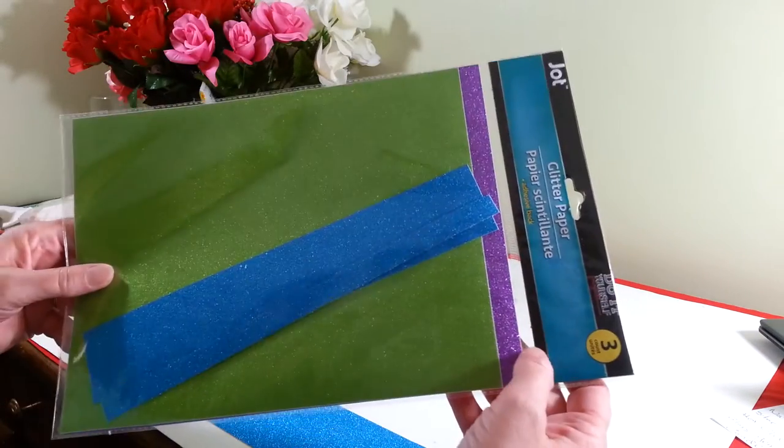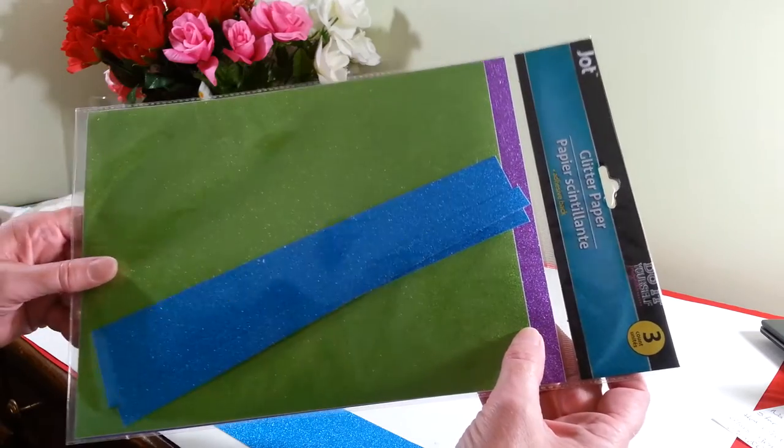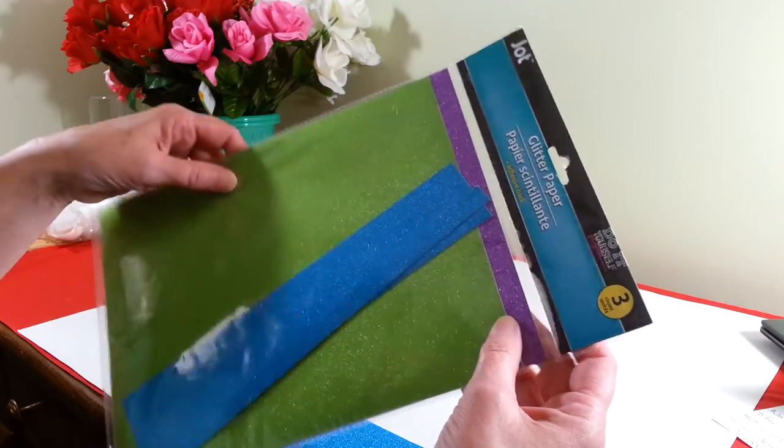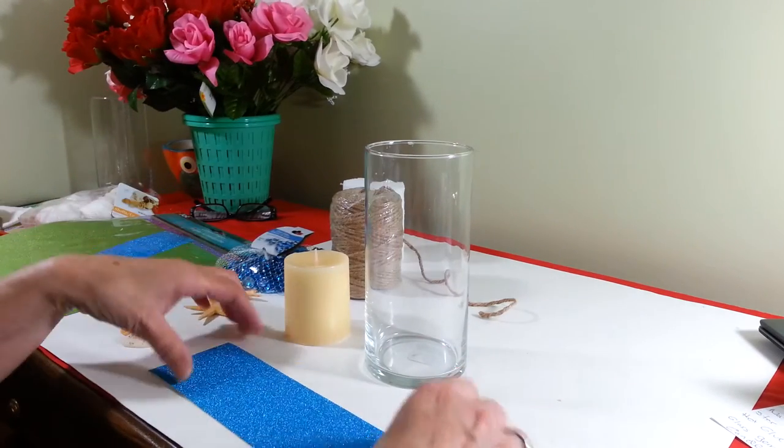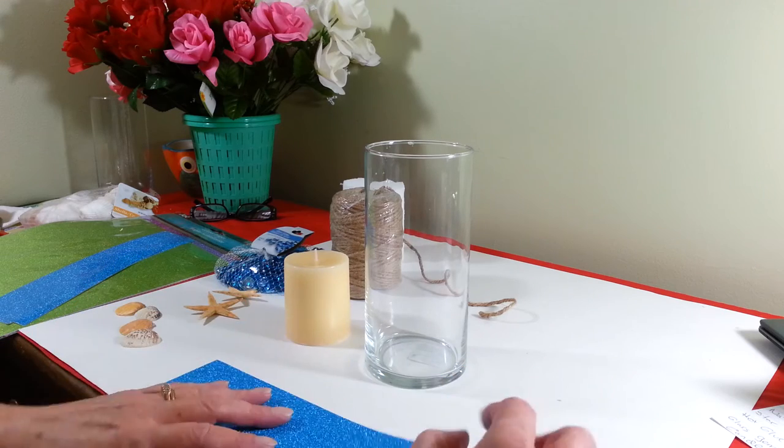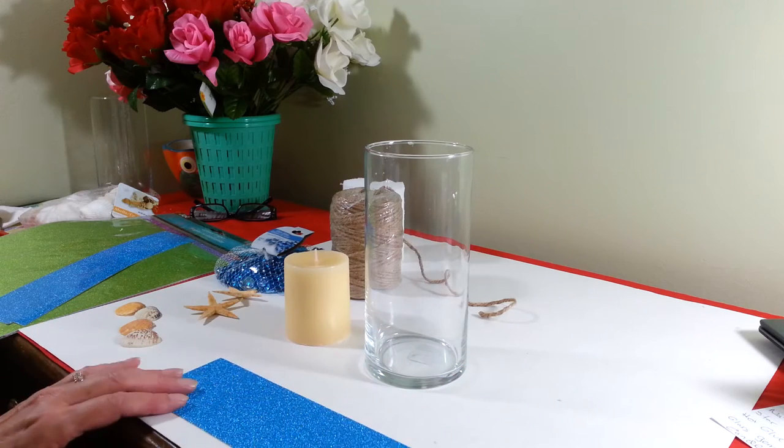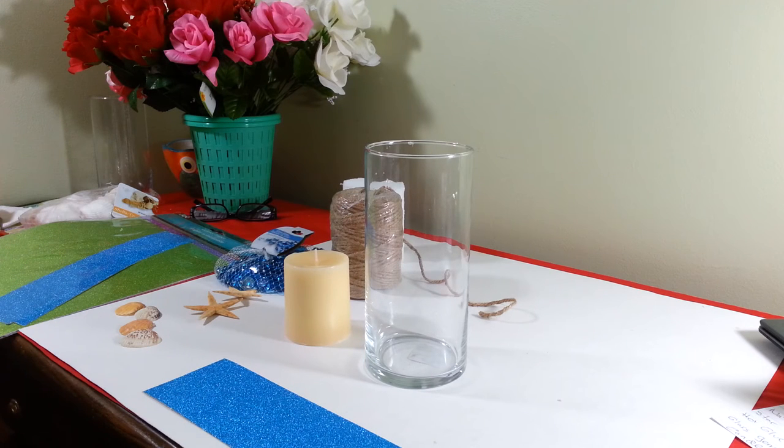I purchased this glitter paper that comes in three different colors: purple, green, and blue. We're going to be using the blue. It has a self-adhesive back, which is very thin when you peel it off and kind of difficult to work with. So I think I'm just going to leave it on and hot glue this right to here. I tried it before and I really had a hard time getting the wrinkles and bubbles out of it.